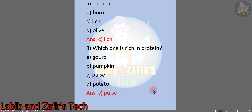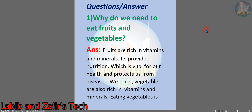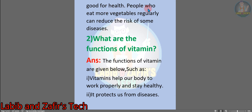Now I am going to show you the question answers of this chapter. Number 1: why do we need to eat fruits and vegetables? Answer: fruits are rich in vitamins and minerals. They provide nutrition which is vital for our health and protects us from diseases. Vegetables are also rich in vitamins and minerals. Eating vegetables is good for health. People who eat more vegetables regularly can reduce the risk of some diseases.